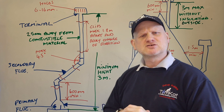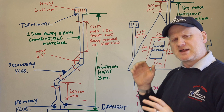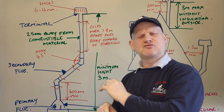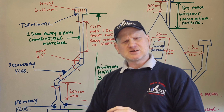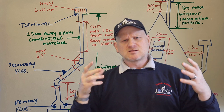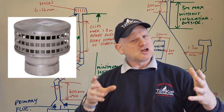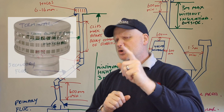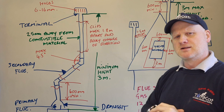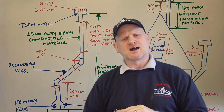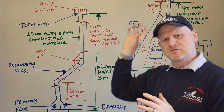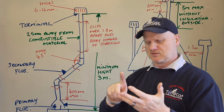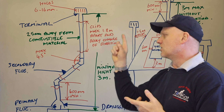The maximum height is per manufacturer's instructions — check those. At the top of the secondary flue is the terminal. The slots or holes in the terminal must allow the passing of a 6mm ball but not a 16mm ball. So those are the major components: primary flue, draft diverter, secondary flue, and terminal.